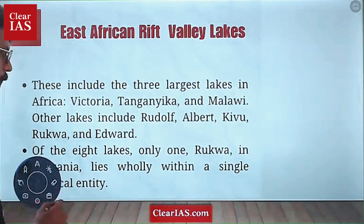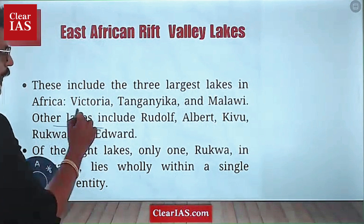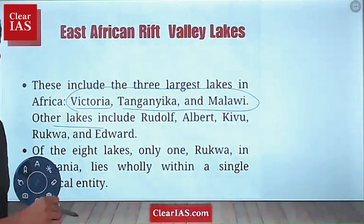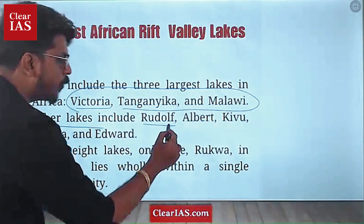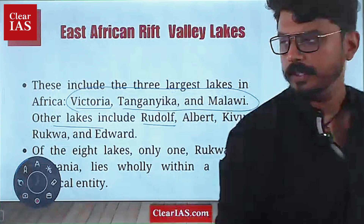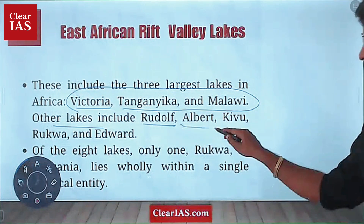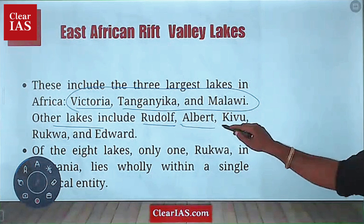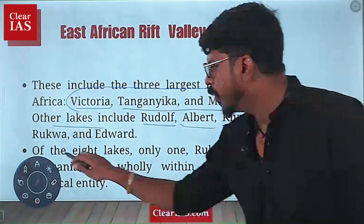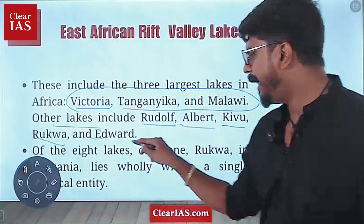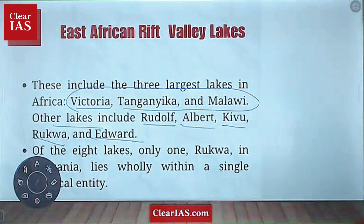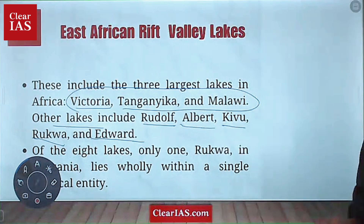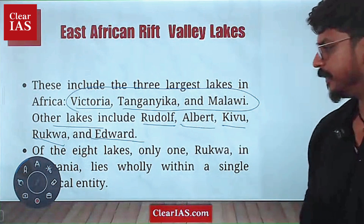So Victoria, Tanganyika and Malawi we already know. The other lakes include Rudolph, Albert, Kivu, Rukwa, and Edward. These are the smaller lakes that are formed in the Rift Valley.